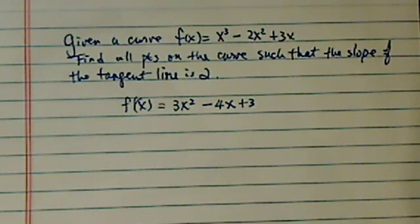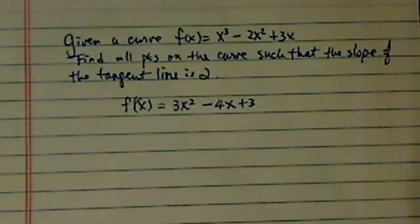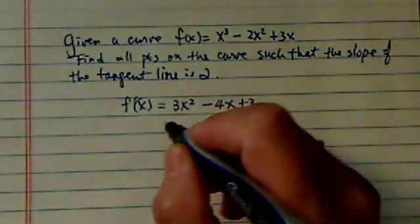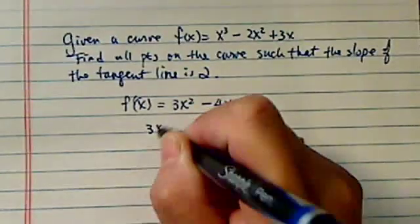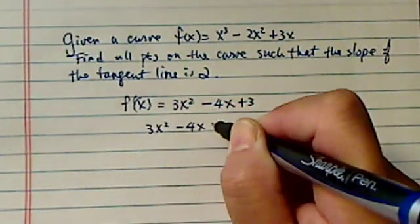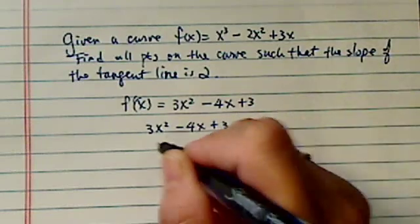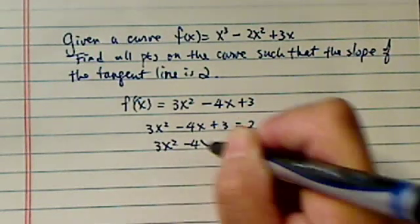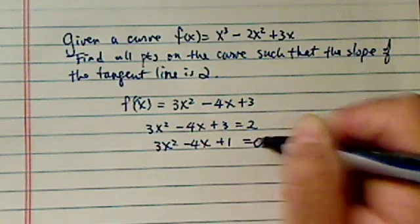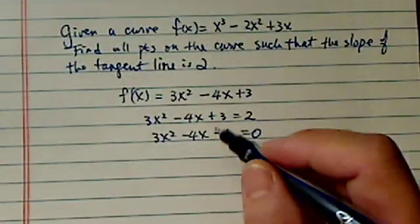Now once we find the derivative, the next thing to do is to set it equal to 2. So basically we're solving a quadratic equation here. Let's move this around so we have 3x squared minus 4x plus 1 equal to 0.